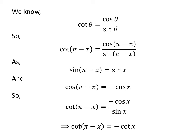We know cosine of x upon sine of x equals cotangent of x. So cotangent of pi minus x equals minus cotangent of x.